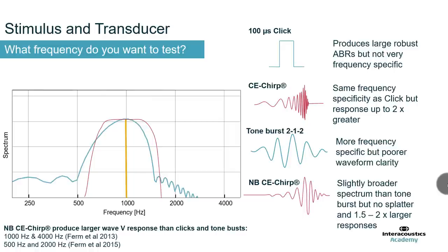The narrowband CE chirp has very slightly broader spectral content than a tone burst but no spectral splatter, making it pretty equivalent to the tone burst in frequency specificity, while producing 1.5 to 2 times larger ABR responses. There has been a huge international shift from using clicks and tone bursts to CE chirps and narrowband CE chirps, with Inga Firm being the author of two of the most notable studies supporting this.